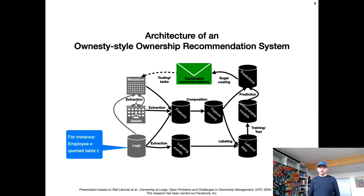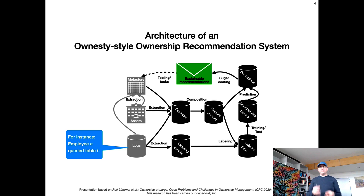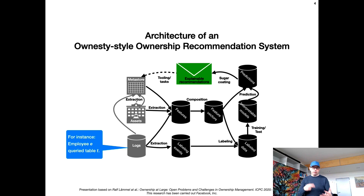At Facebook, we have worked on the so-called honesty architecture. This is an architecture that basically supports ownership management, and particularly it supports ownership recommendation — that is, for assets that may not be owned or may not be strongly owned, it recommends owners. Even for assets that are owned, it might recommend better owners, because ownership changes over time.